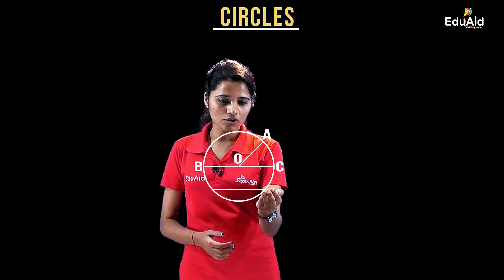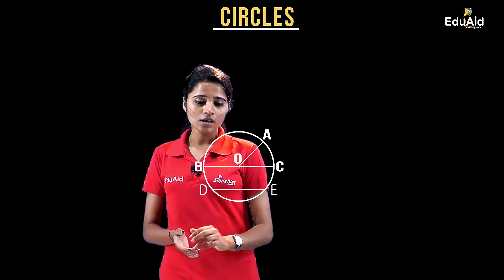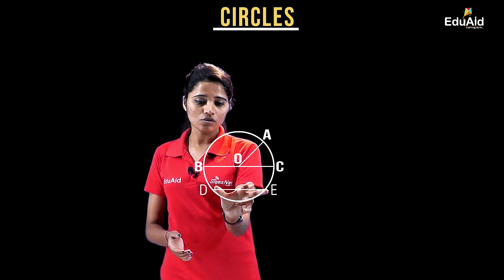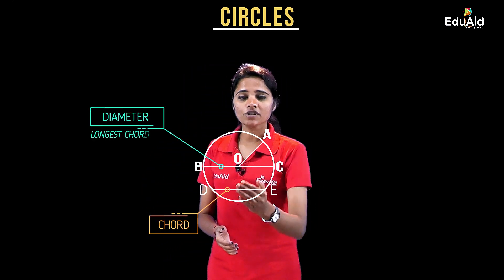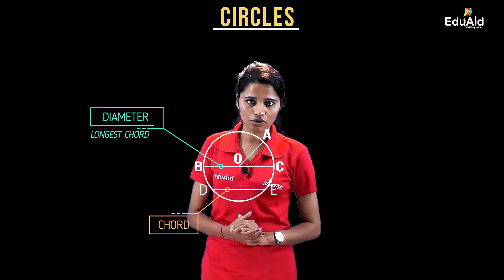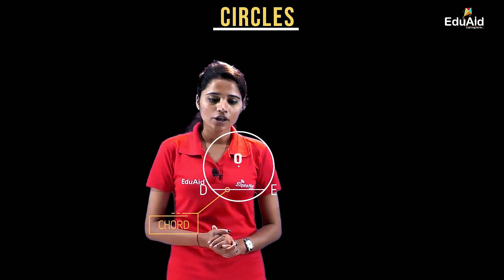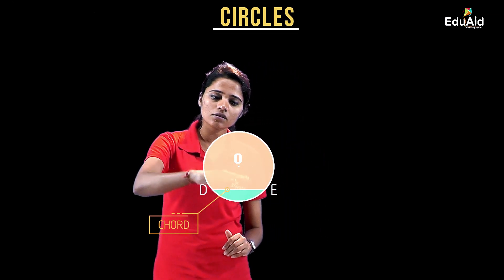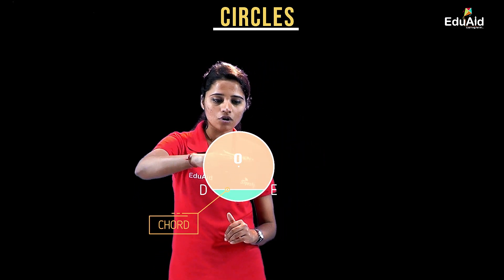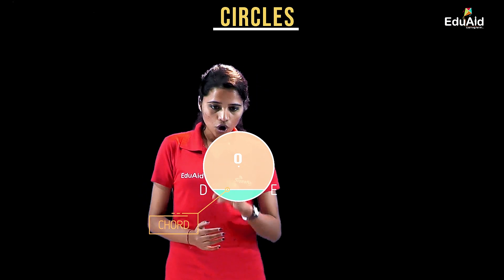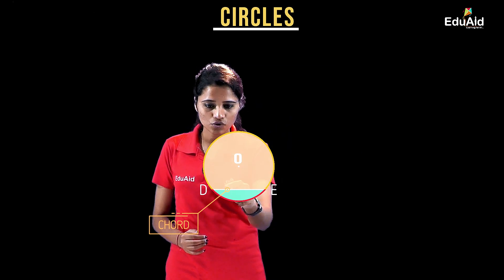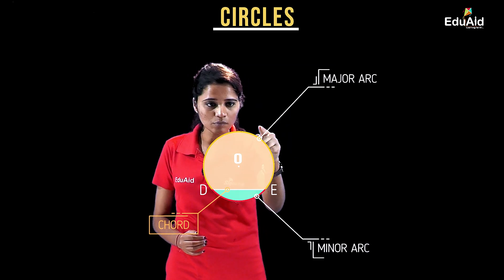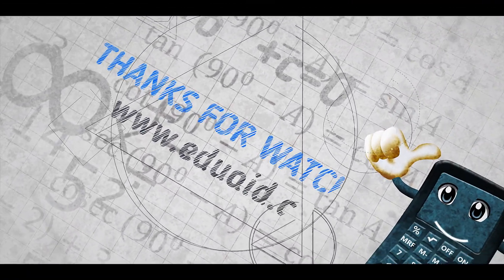Drawing line DE, which joins any two points on the circle, DE is known as the chord of the circle. The diameter is also a chord and it is the longest chord of the circle. DE as a chord divides the circle into two portions — one above the chord and one below. The chord also subtends two arcs on the circle: this is the minor arc and this is the major arc that the chord subtends on the circle.